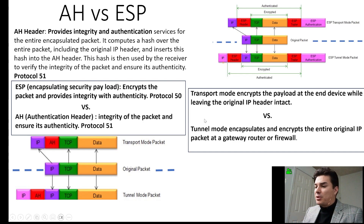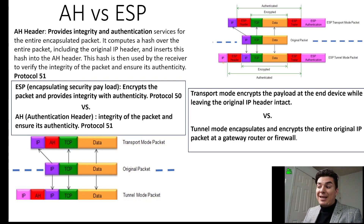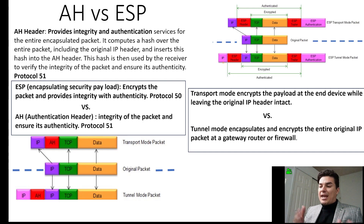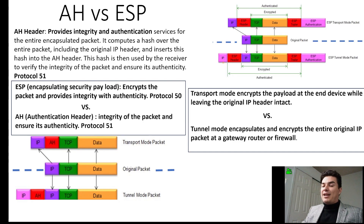In summary: transport mode encrypts the payload at the end device while leaving the original IP header intact, and tunnel mode encapsulates and encrypts the entire original IP packet at the gateway router or firewall. So tunnel mode is gateway router to gateway router, and transport mode is end device to end device.